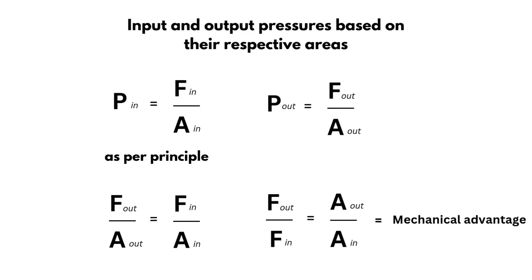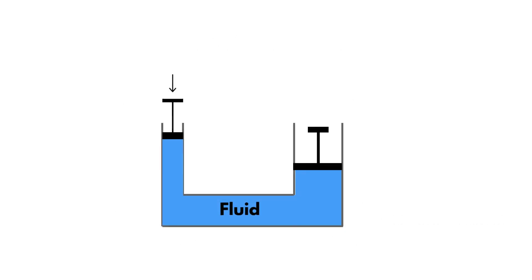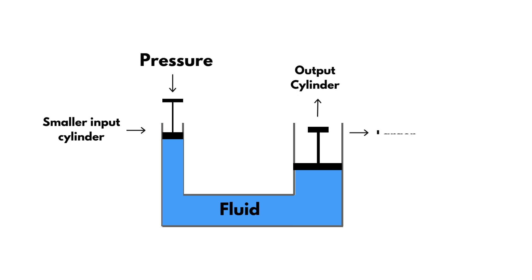As depicted in the diagram, the application of pressure to the fluid through the smaller input cylinder causes the fluid to spread uniformly, which in turn lifts the output piston associated with the larger surface area cylinder.